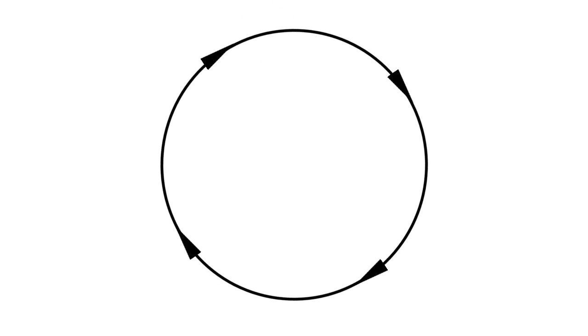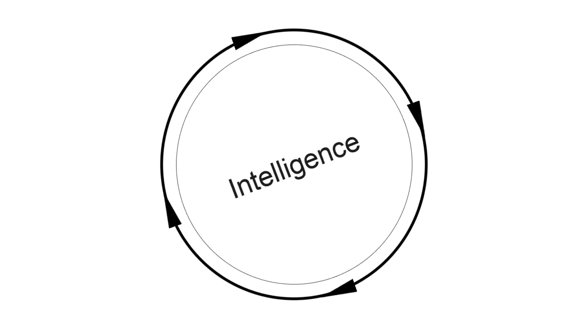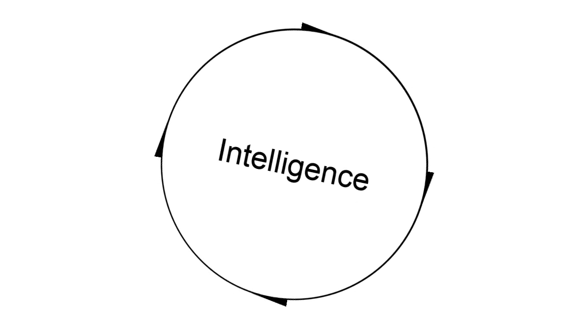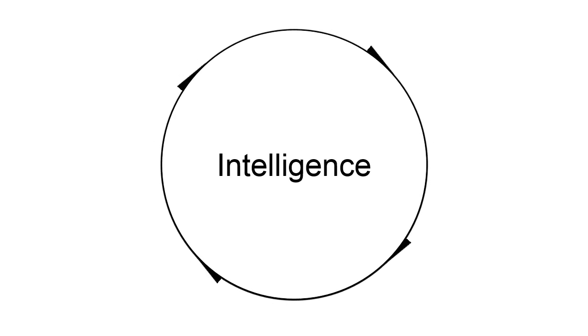If we reach that point, then we might, and I emphasize might, be in trouble. That is because an artificial intelligence entity going through recursive self-improvement is continuously and perpetually improving its own intelligence until it reaches the physical limits of intelligence itself.